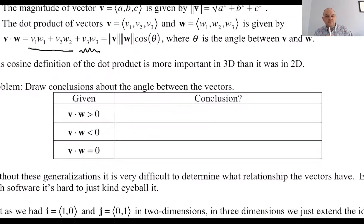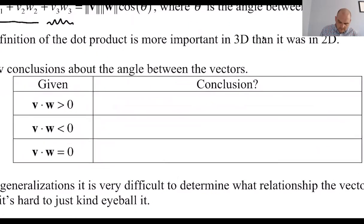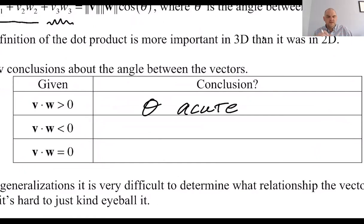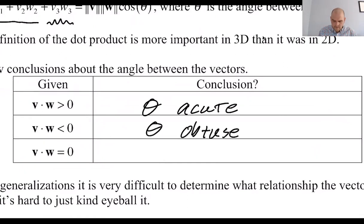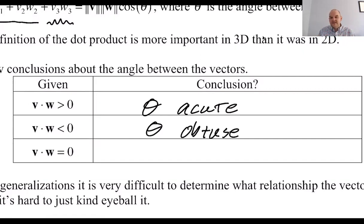If the dot product is positive, then the angle is acute. If it's negative, that is obtuse. And if the dot product is zero, that's the greatest thing because it means the vectors are orthogonal. Orthogonality is a really big deal. There are a lot of things where it just turns out that something is orthogonal to something else, and that's why it works. A lot of that will come down to the dot product.